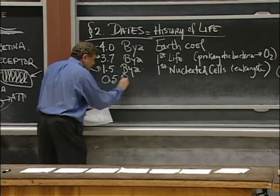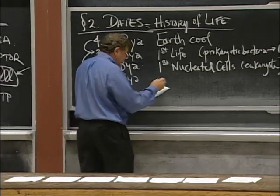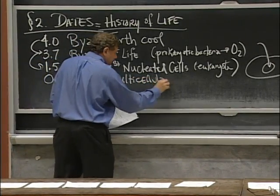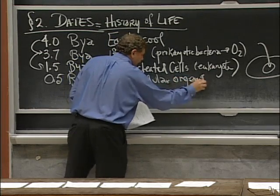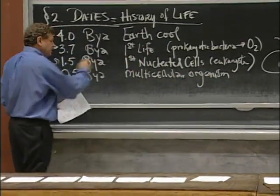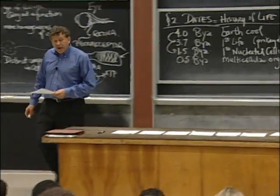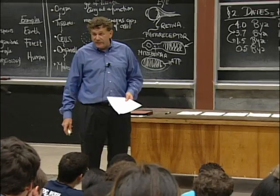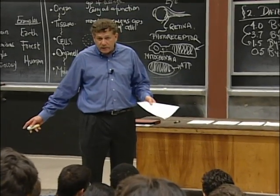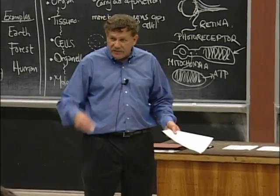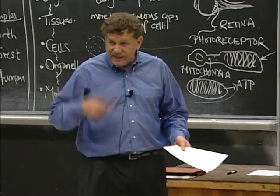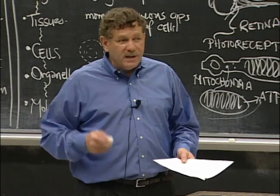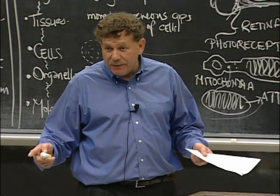0.5 billion years ago, roughly speaking, what you have are multicellular organisms with body plans. Up to this point, you have single-celled organisms. Now you get multicellular organisms with body plans. And another remarkable thing, once body plans, multicellular body plans are invented, they explode very quickly. Somehow, it was hard to invent multicellularity, to get cells to work together and be an organism. But once it was invented, it was not hard to diversify it into zillions of different body plans and forms.